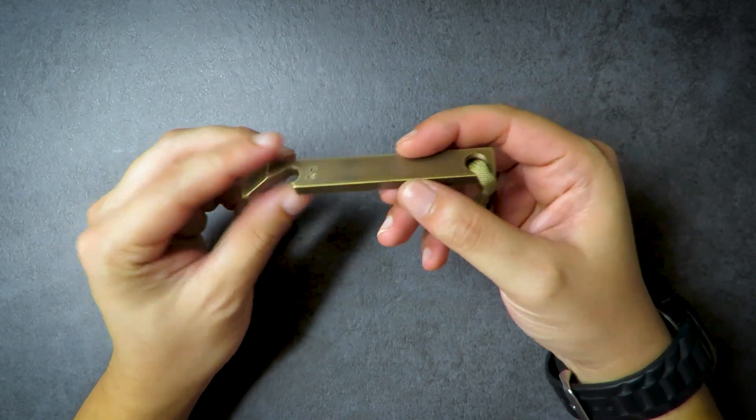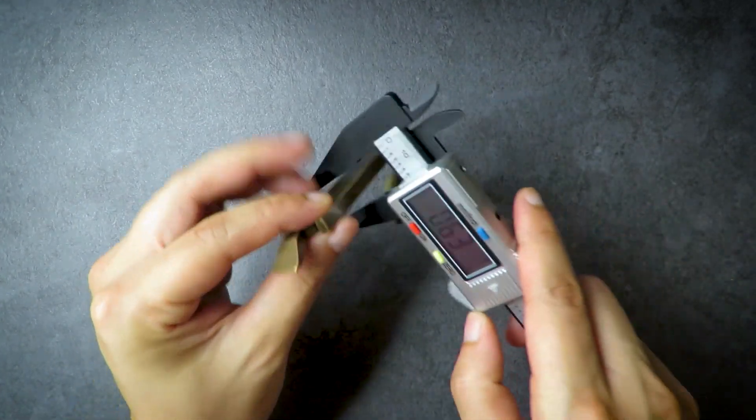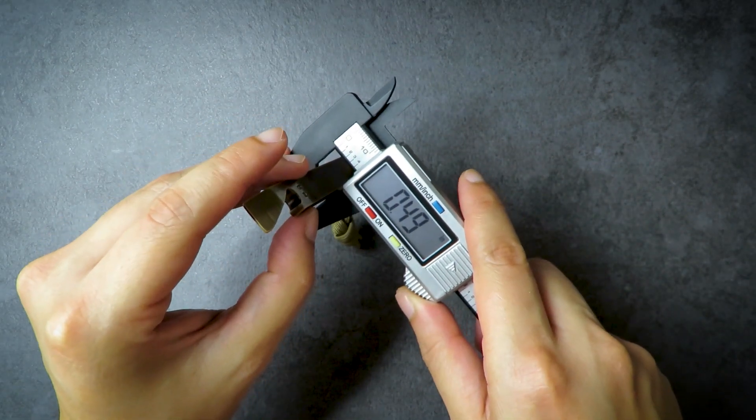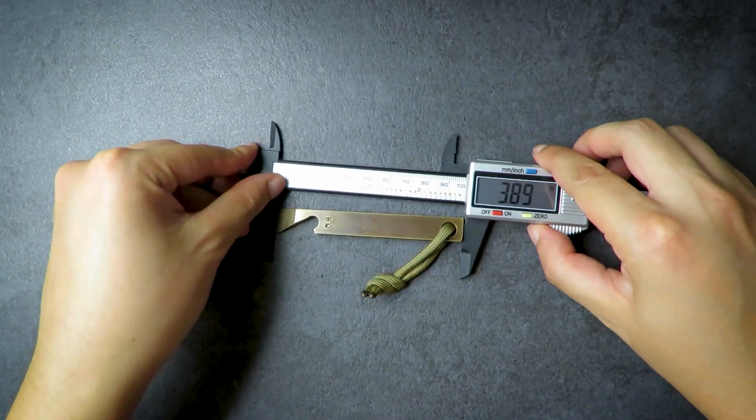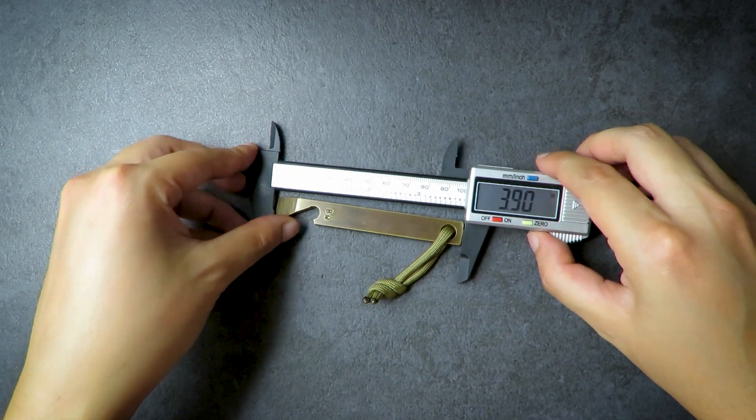So you have here the main pry tool, and as you can see here, this is pretty thick. Let me do a quick measurement right here. The thickness here is like a quarter of an inch. You have the thickness in this dimension at right under half an inch, and then you have a total length of 3.89 inches, sorry, 3.9 inches.